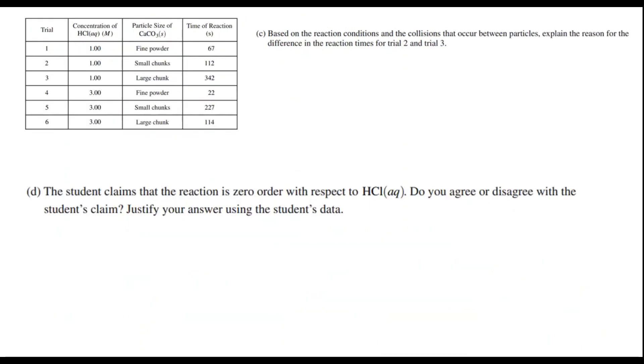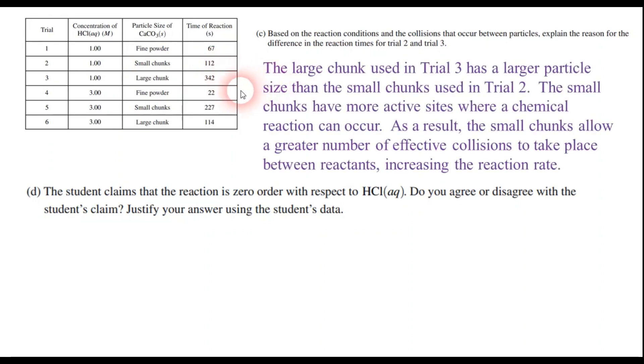Moving on to part C here, we have a question about explaining why there's a difference in the reaction times for trials 2 and 3. In trials 2 and 3, we have the same concentration of acid. The difference is small chunks versus large chunks. And so what you want to say here is that the large chunk that's used in trial 3 has a larger particle size than the small chunks used in trial 2. And because of that, the small chunks have what we say more active sites or more spots or more places where a chemical reaction can take place.